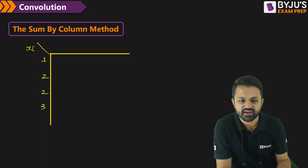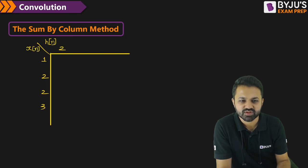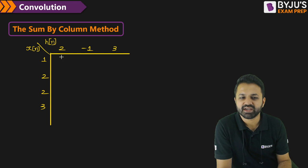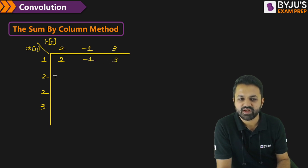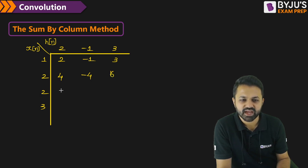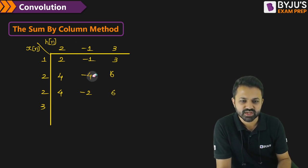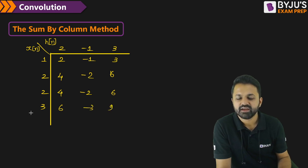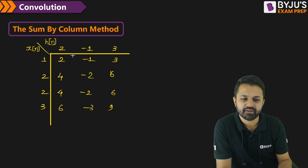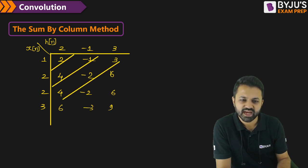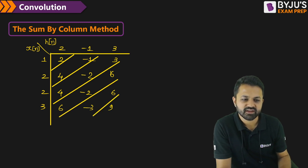This is your x of n, and here we have h of n which is 2, minus 1, 3. Now just multiply them. When you multiply 1 with 2, minus 1, and 3 you get 2, minus 1, and 3. When you multiply with 2 you get 4, minus 2, and 6 — wait, that is 4, minus 4, and 6. And then again it is 4, minus 2, and 6. Then minus 2. And multiplying 3 with 2, minus 1, 3 we get 6, minus 3, and 9. Now add them in this way to get your final answer.